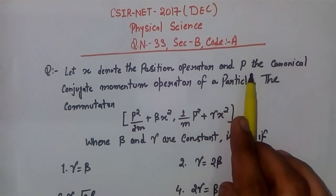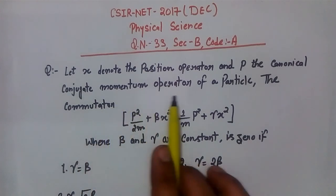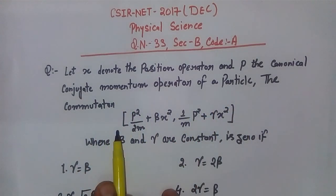The problem is: let X denote the position operator and P the canonical conjugate momentum operator of a particle. Then the commutator [P²/2m + βX², P²/m + γX²] where β and γ are constants, is zero if...